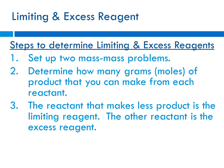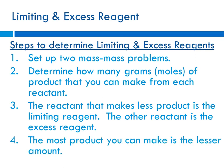The reactant that makes less product is what we call the limiting reagent — it's going to limit how much can be made, and that's the one that's going to be completely used up. The other reactant is the so-called excess reagent, because there's more than enough of it, so there's leftover. The most product you can make is always the lesser amount.